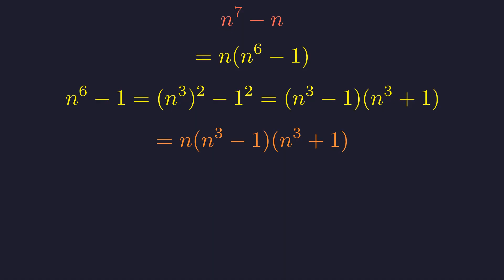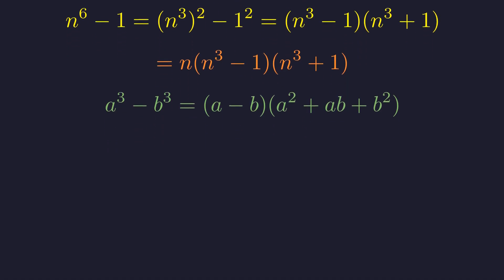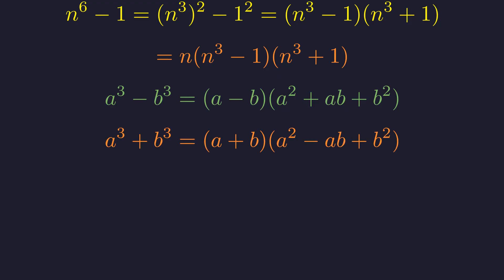Now we've got a difference of cubes and a sum of cubes staring at us. Both of these have their own factoring patterns. For difference of cubes, a^3 - b^3 factors as (a - b)(a^2 + ab + b^2). And for sum of cubes, a^3 + b^3 factors as (a + b)(a^2 - ab + b^2).